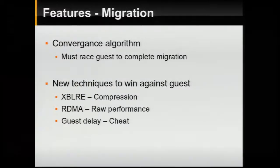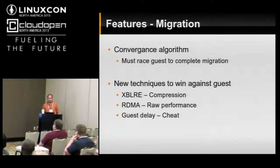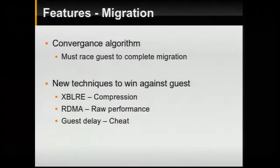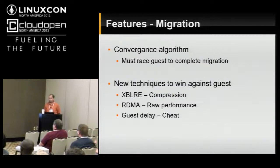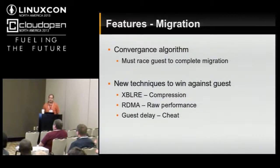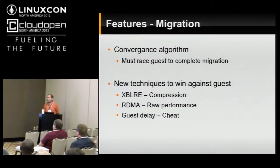Migration is really interesting. The general idea is that it's a converging algorithm — at a high level, the guest is dirtying memory and we're copying that dirty memory over the network, trying to copy faster than the guest is dirtying memory. When this works, it's great. But the problem is that there is a race. The most common approach to addressing the race is to simply give up: if it takes too long and the hypervisor is losing, you just stop the guest and the guest gets a long period of downtime. We have some active approaches to try to win the race more often.